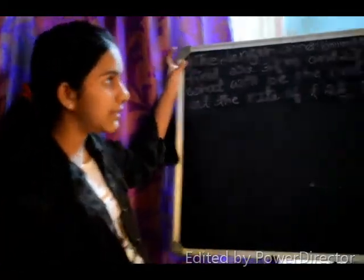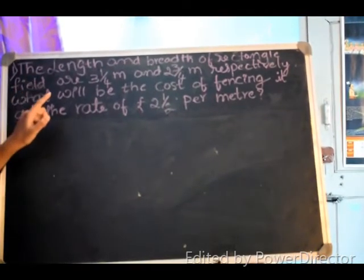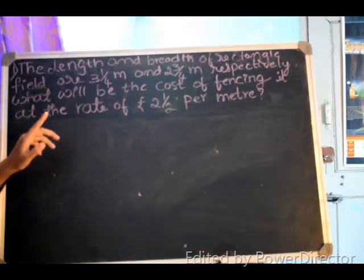The question is: the length and breadth of a rectangle field are 3 1/4 meter and 2 3/4 meter respectively.